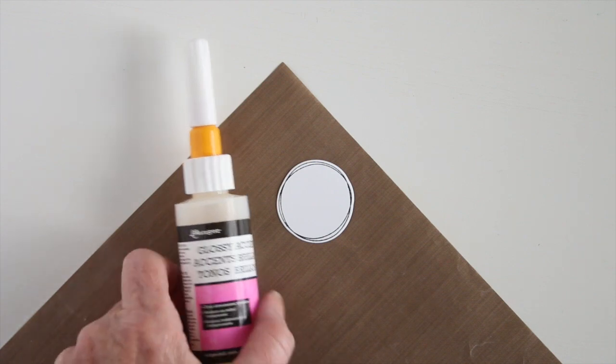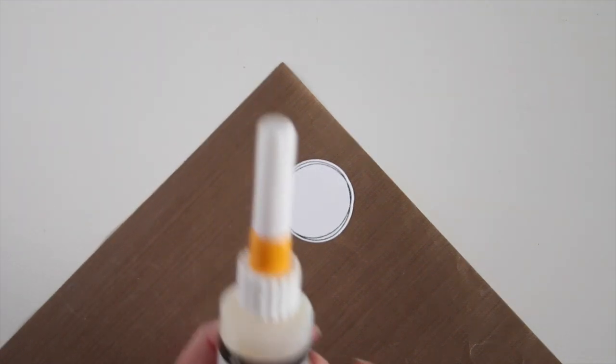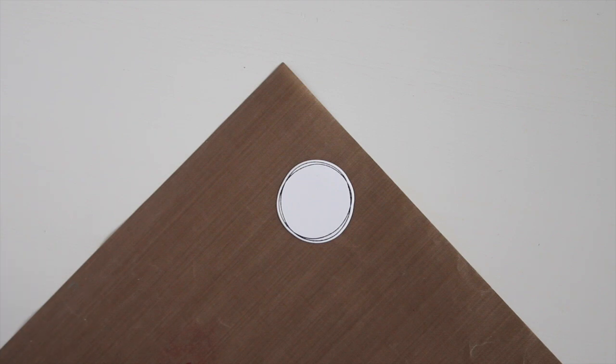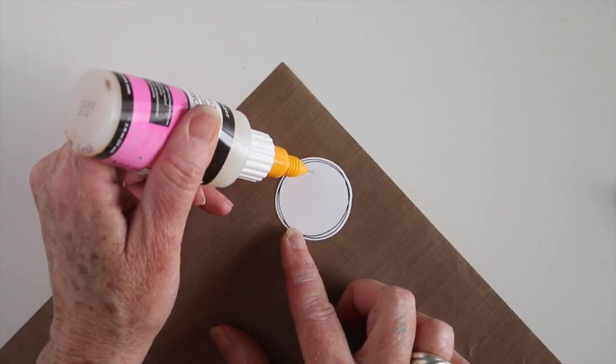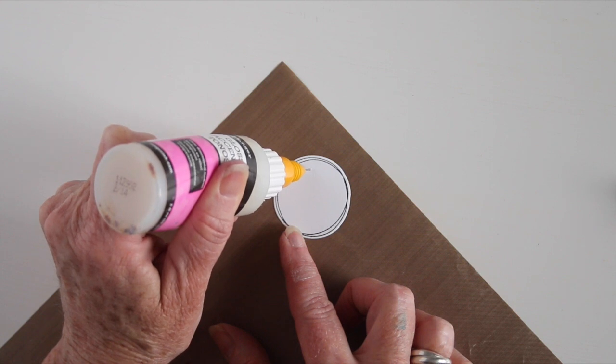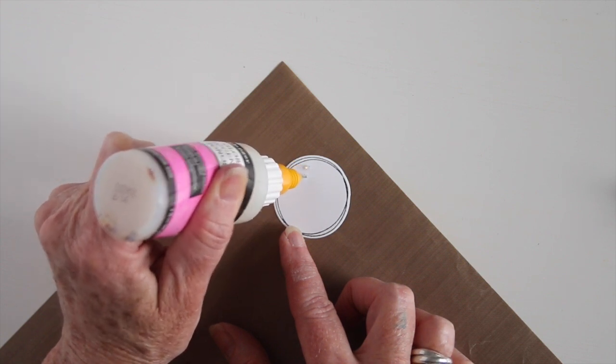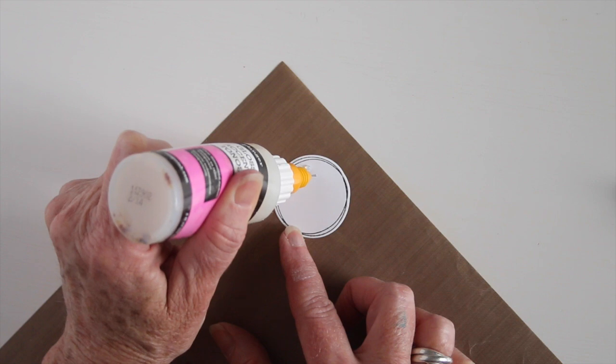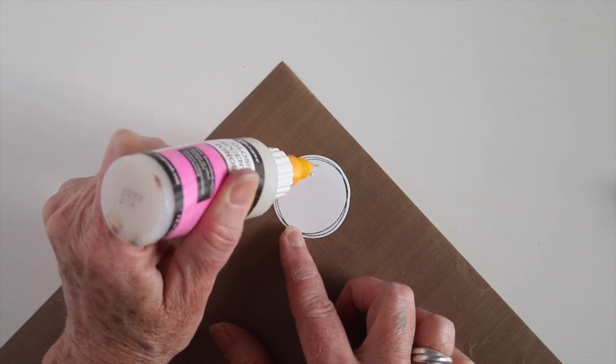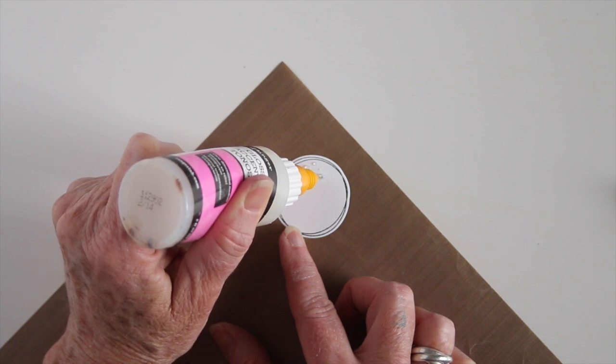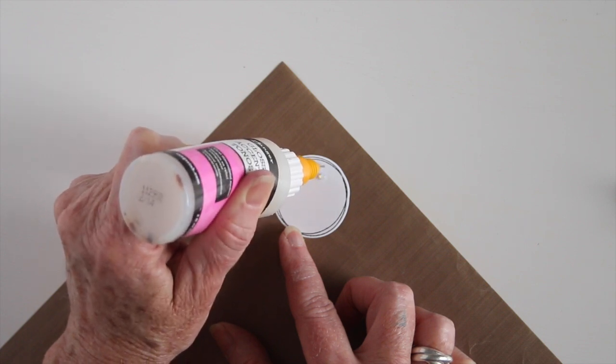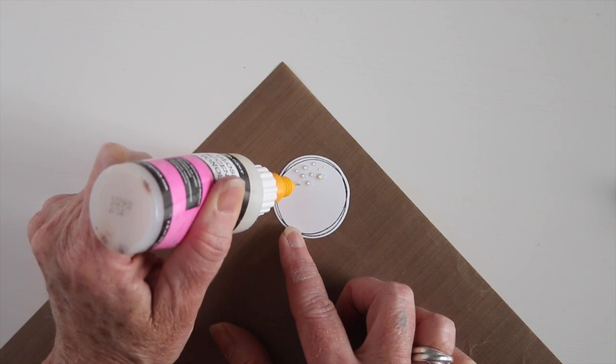Glossy Accents is another great choice to use as a resist. And I like to use it just like I do the masking fluid to create my own pattern on my paper. I have put a fine line applicator tip on my bottle and this really helps it come out in a really small amount. So here I'm just going to go ahead and add my dots just like I did the masking fluid. And I can also create larger dots and smaller dots. Once I'm done creating my pattern I will let this dry completely and then I can add my ink.